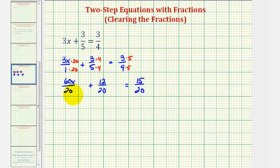To clear the fractions from the equation, we're going to multiply each fraction by 20, or both sides of the equation by 20. Multiply this fraction by 20 over 1, this fraction by 20 over 1, and this fraction by 20 over 1. Notice in each case, 20 over 20 simplifies to 1, eliminating the fractions from the equation.